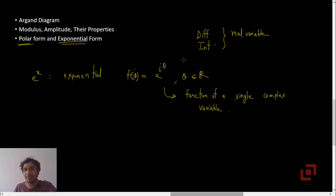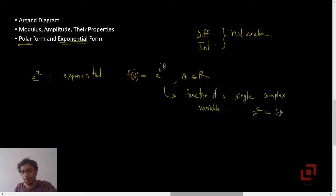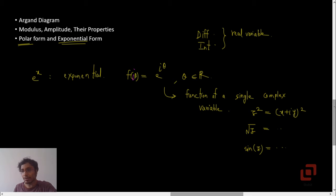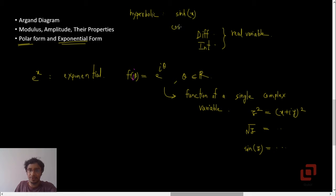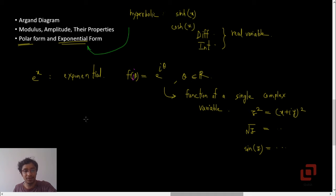This is covered in engineering as well as in BSc Maths or BSc Physics, where you need the methods to differentiate complex functions. Other examples of functions of a single complex variable would be z squared, sine z, cos z. Hyperbolic functions — sinh of x and cosh of x — all have a special connection with the exponential form of a complex number, as we discussed when solving examples in differential equations.